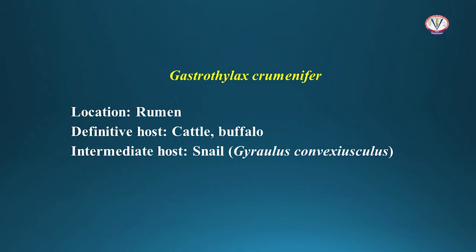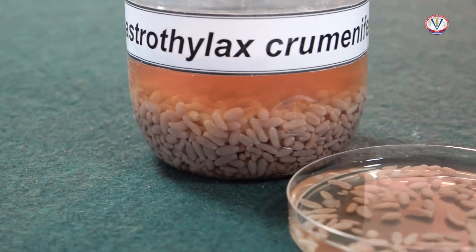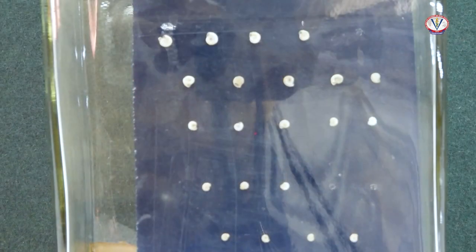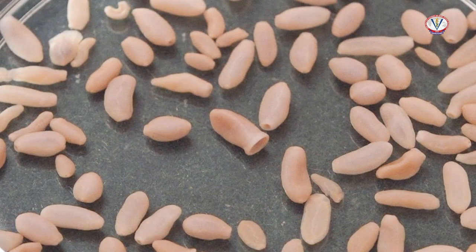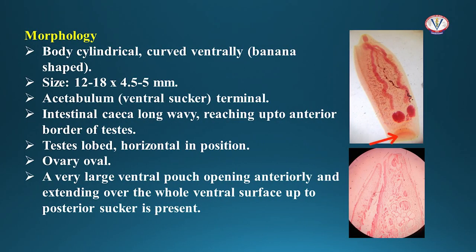Gastrothylax grumenifer is present in the rumen of cattle and buffalo. The intermediate host is snails of the genus Gyraulus. The body is cylindrical, curved ventrally, and typically banana-shaped. The ventral sucker or acetabulum is terminal. The intestinal caeca are long and wavy, reaching up to the anterior border of the testes. Testes are lobed and horizontal in position. The ovary is oval. A very large ventral pouch opening anteriorly and extending over the whole ventral surface up to the posterior sucker is present.